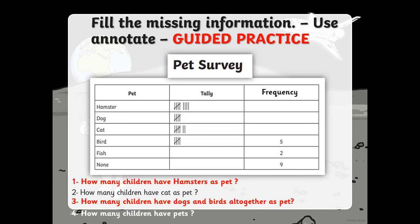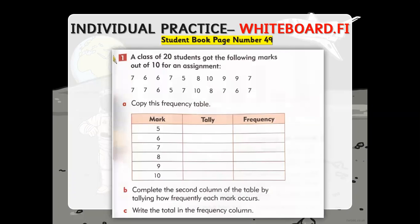You can pause the video, do your work, and then resume. Now this next exercise is from the student book, page 49, question one. Different numbers appear more than once. This represents a class of 20 students who received marks out of 10 for an assignment. You have to complete both the tally marks column and the frequency column for each mark scored.